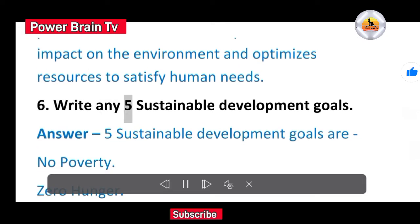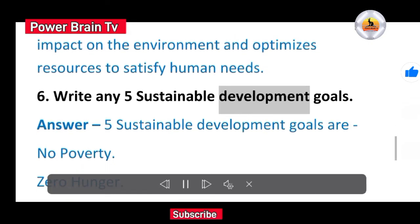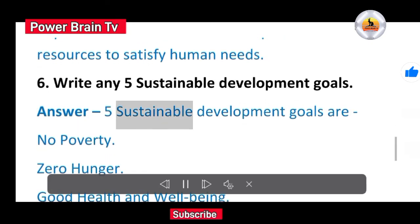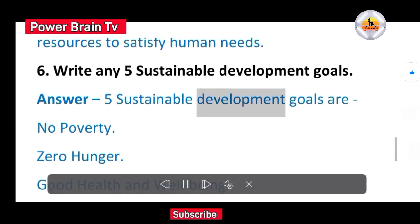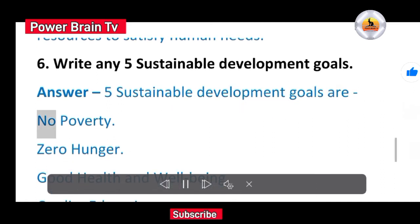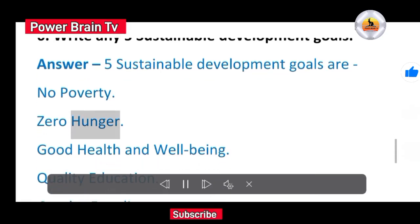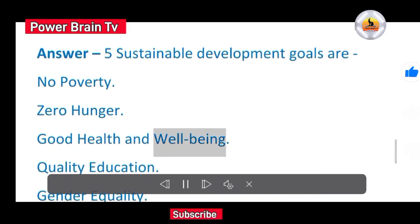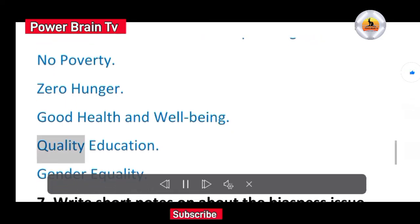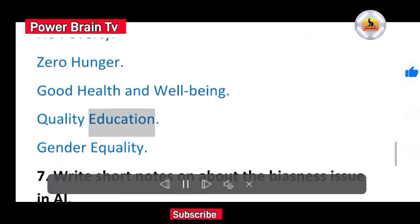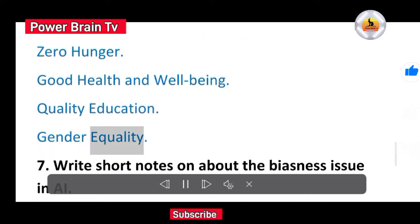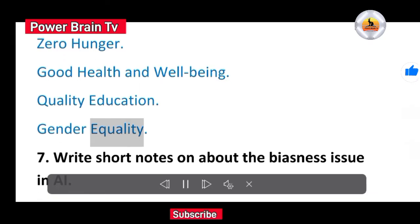6. Write any 5 sustainable development goals. Answer. 5 sustainable development goals are No poverty, Zero hunger, Good health and well-being, Quality education, Gender equality.